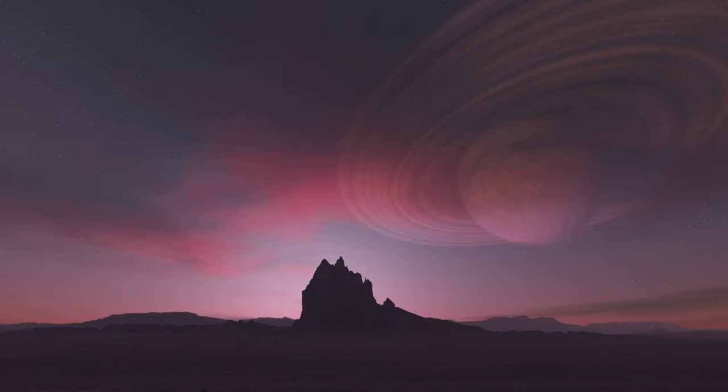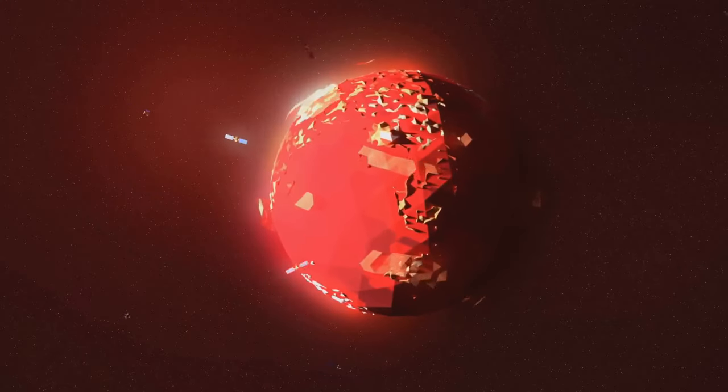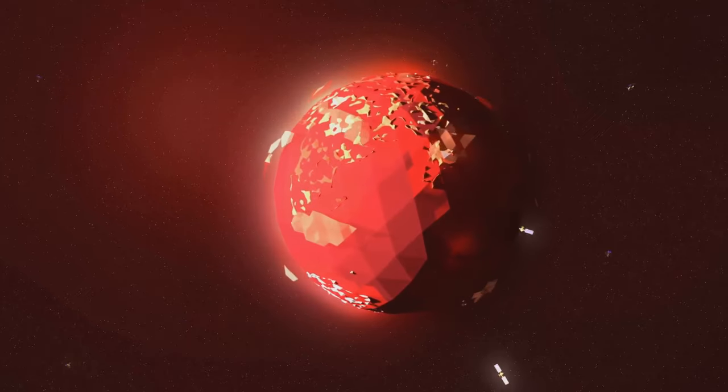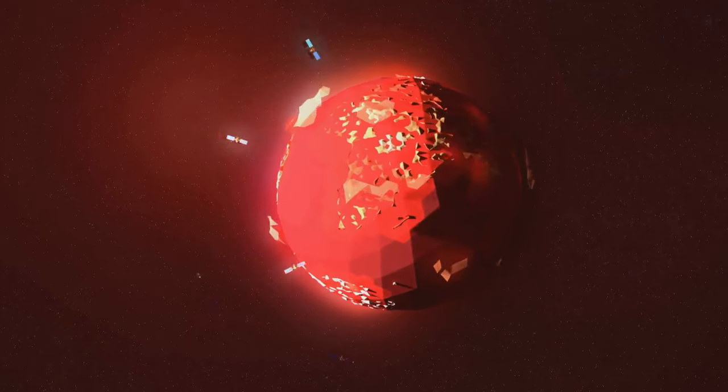The vegetation on Gliese 581c, if any exists, would also be affected by the red light from its star. Plants on this alien world might evolve to absorb light at different wavelengths than plants on Earth,